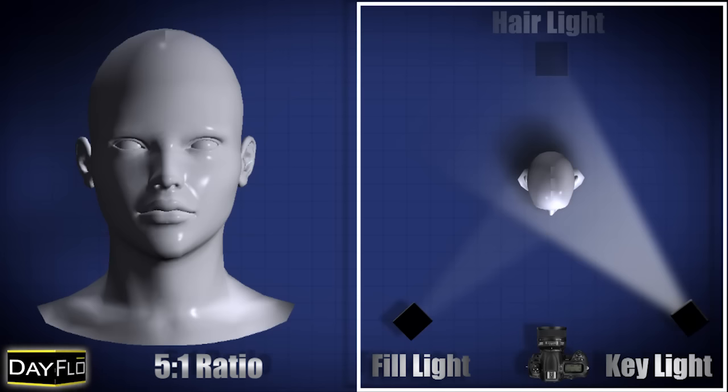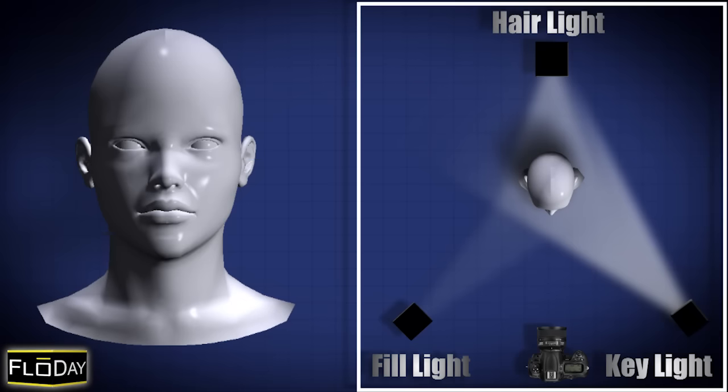The third light rounding out your three point lighting scenario is your hair light. The hair light casts light between your subject and the background to create separation. This light achieves separation by creating a sharp outline on the back of the subject and accenting the hair from the top, spilling down onto the shoulders from the back to front.